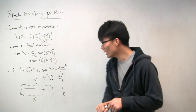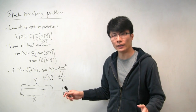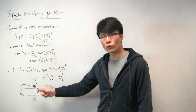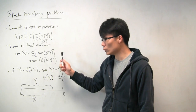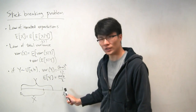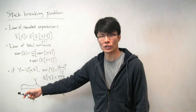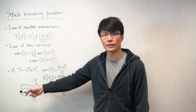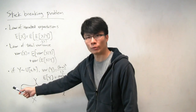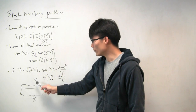So let's get started on the problem. We have a stick of some fixed length l, and we break it uniformly at random. We choose a point uniformly at random along the stick and break it there, then keep the left portion of that stick. We'll call the length of this left portion after the first break random variable y, which is random because the break point is random.